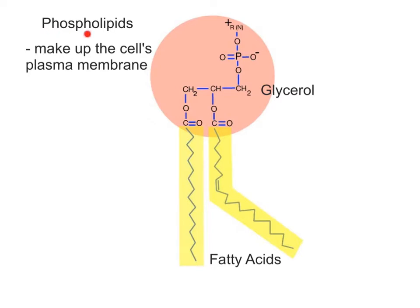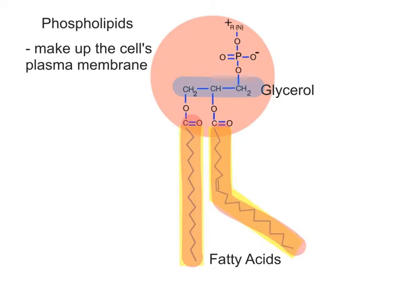Phospholipids are another important lipid in the body, forming much of the overall structure of the cell's plasma membrane. Phospholipids consist of a three-carbon glycerol backbone, like the triglycerides, but have two fatty acid chains attached to the first two carbon atoms. Remember, the triglycerides contain three fatty acid chains.